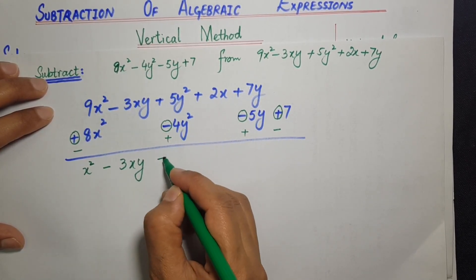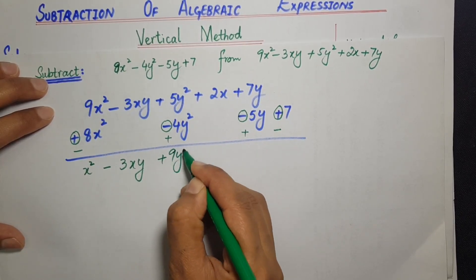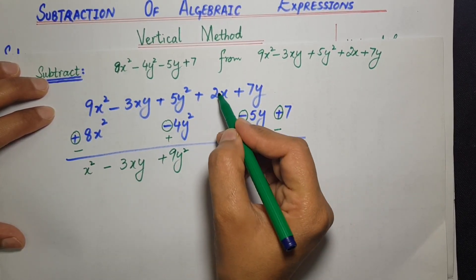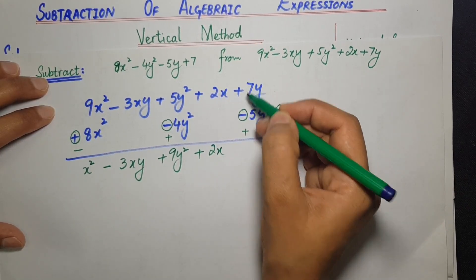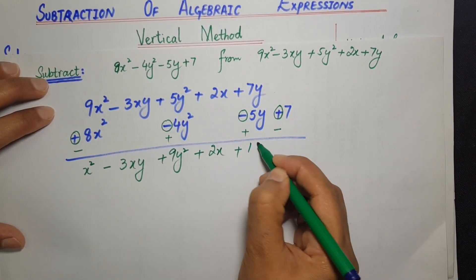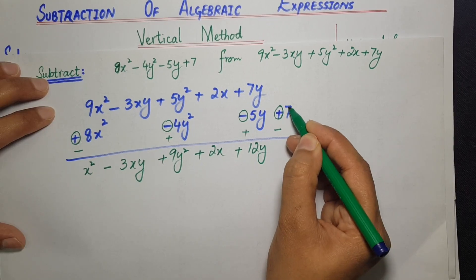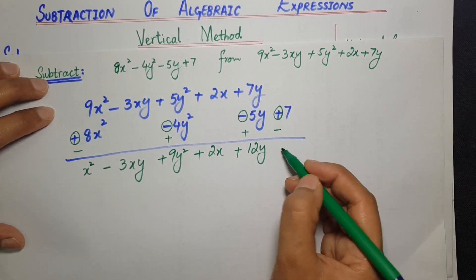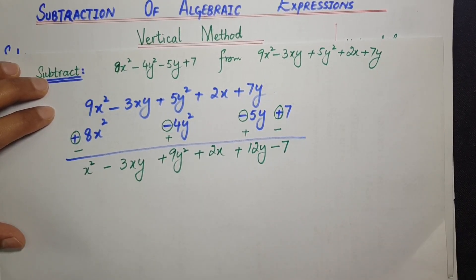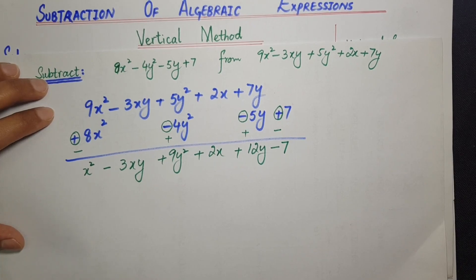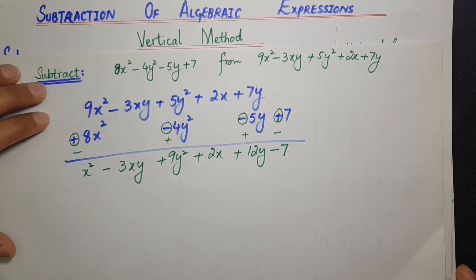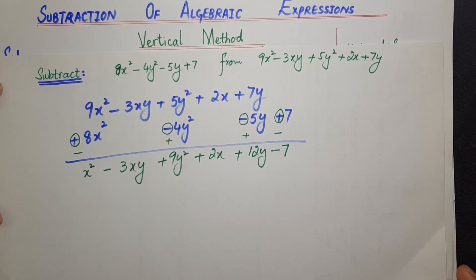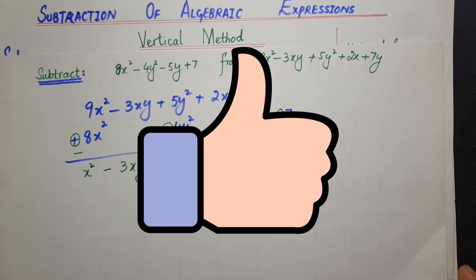یہاں plus 9y²، plus 2x — یہ دونوں same sign ہیں۔ 7 and 5 = 12، تو 12y۔ اور یہ minus 7 — that is the answer۔ آج ہم نے algebraic expression کی subtraction vertical method کی مدد سے کی ہے۔ next آنے والی ویڈیو میں ہم horizontal method کو discuss کریں گے۔ اللہ حافظ۔